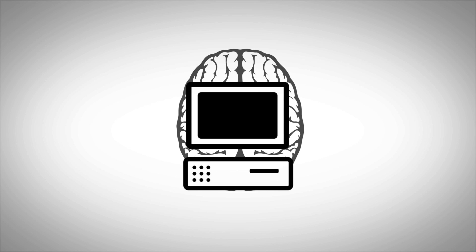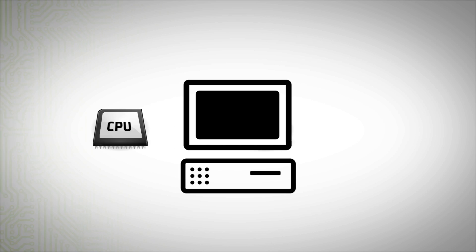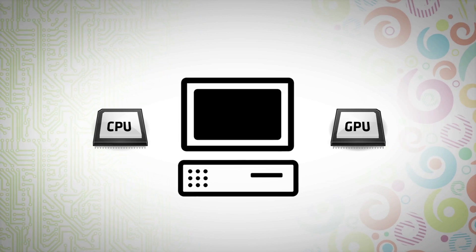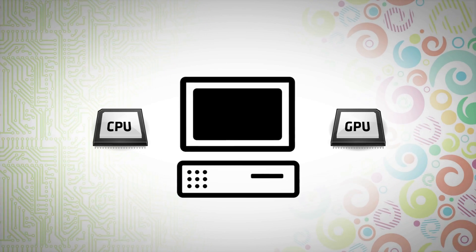Like our brain, processors have two separate components for handling logical and creative information: a central processing unit, or CPU, for handling logic, and a graphics processing unit, or GPU, for the creative side.